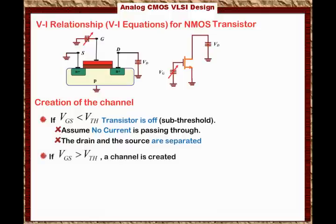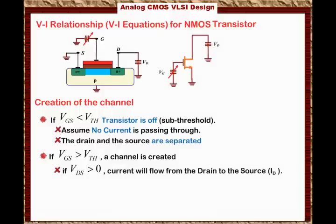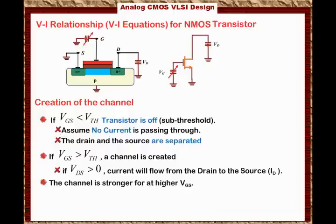If VGS — the voltage from gate to source — is bigger than the threshold voltage, then a channel is created. And if VDS is greater than 0, the current will flow from drain to source; we call it ID. Also remember that the channel is stronger for higher VGS, so the more VGS we apply, the stronger the channel, meaning more current will conduct through the transistor.